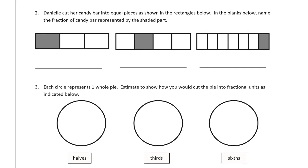Danielle cut her candy bar into equal pieces as shown in the rectangles below. In the blanks below, name the fraction of candy bar represented by the shaded part. So these, there's three parts here, so they're thirds, and this is one shaded in, so it's one third. And these are one, two, three, there's four parts here, so these are fourths, and there's one shaded in, so it's one fourth.